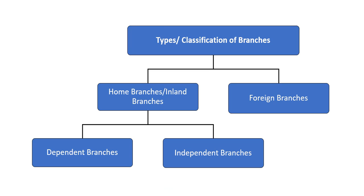Next, we will move to the types or classification of branches. Basically there are two types: home branches, also called inland branches, and foreign branches. Foreign branches means the expansion of business enterprises by opening different shops or offices in other countries. That means the head office is in our country, India, and the branches in other countries are called foreign branches.